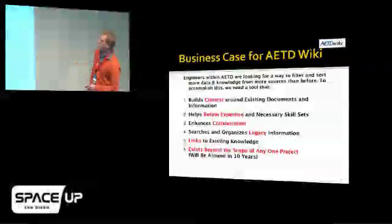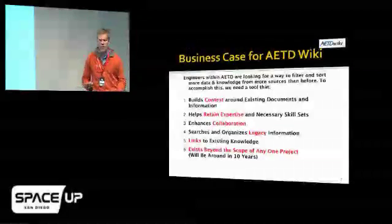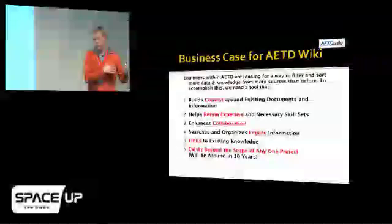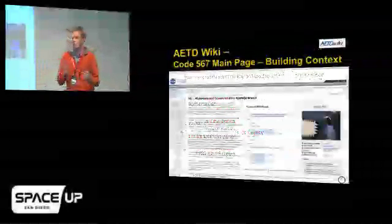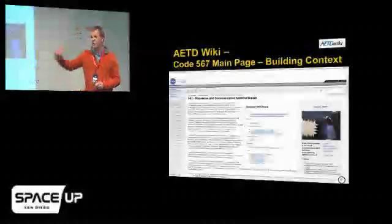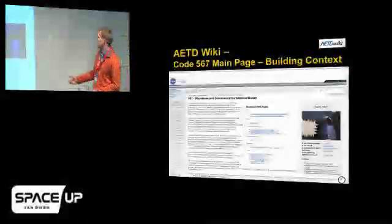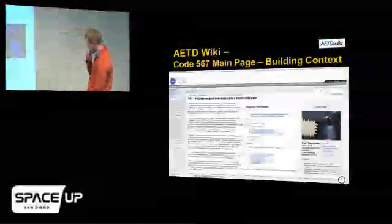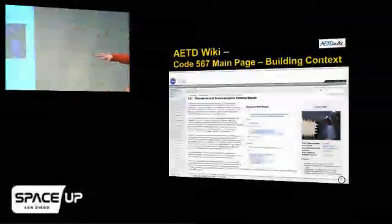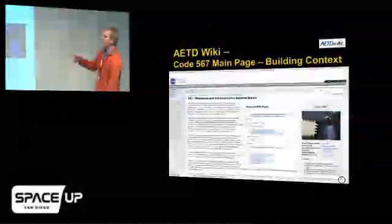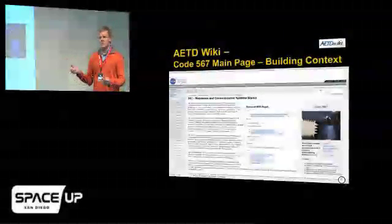What we're trying to do is build context, retain expertise, collaborate, and keep the legacy information — because we can't keep doing the same thing, but we don't want to reinvent the wheel. We still have to know what's been done so we can make a wise decision. We have to break the rules when it makes sense. This is our microwave and communication systems branch. We had a server from 1989 with a website on it, almost like a gopher server.